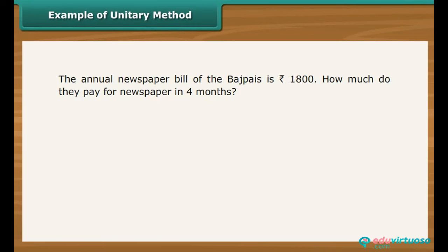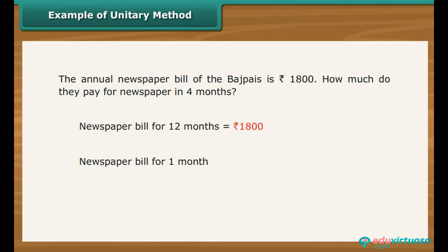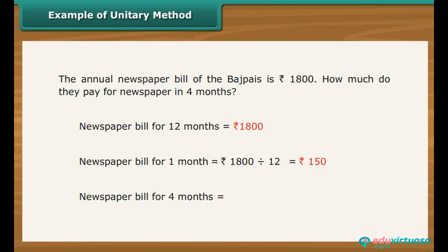Example of unitary method. The annual newspaper bill is Rs. 1800. How much do they pay for 4 months? Newspaper bill for 12 months is Rs. 1800. Bill for 1 month is Rs. 1800 divided by 12, that is Rs. 150. Bill for 4 months is Rs. 150 multiplied by 4, which equals Rs. 600.